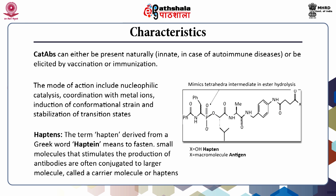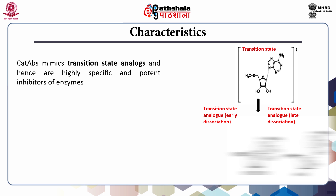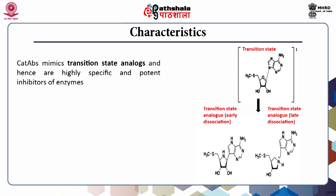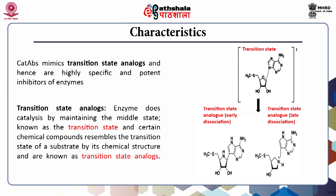The term hapten is derived from the Greek word 'hapten,' which means 'to fasten.' Small molecules that stimulate the production of antibodies are often conjugated to larger molecules called carrier molecules. Catalytic antibodies mimic transition state analogues and hence are highly specific and potent inhibitors of enzymes. Enzymes perform catalysis by maintaining a middle state known as the transition state, and certain chemical compounds that resemble this transition state of a substrate by their chemical nature are known as transition state analogues.